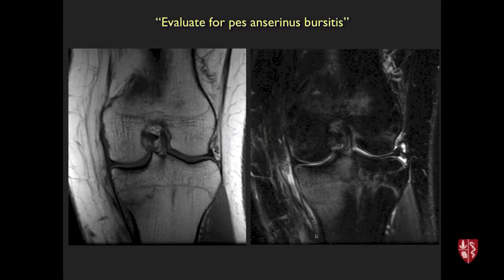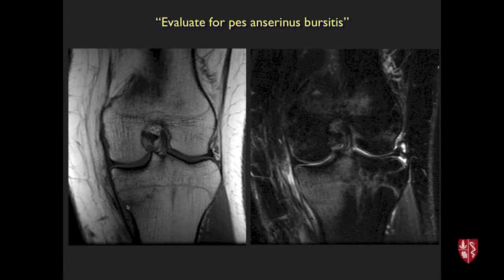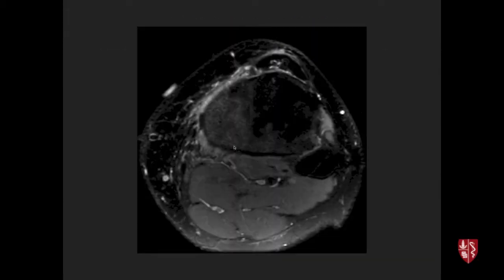A basketball player with medial knee pain was initially thought to have pes anserine bursitis. MRI shows a stress fracture of the proximal tibia: on T1 a fracture line is visible; T2 shows extensive marrow edema with vague low signal and periosteal reaction. Axial images show marrow edema right around the pes anserine insertion — a good clinical differential, but indeed a stress fracture.